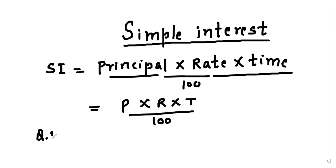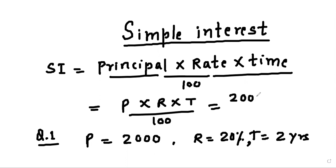Let's see one question. We are given principal equals 2000, rate equals 20 percent, and time equals 2 years. Now we put these values in the formula: P is 2000 multiplied by rate 20 percent and time 2, divided by 100.